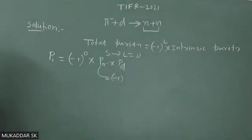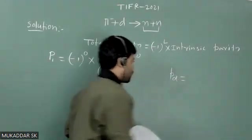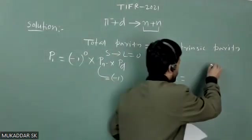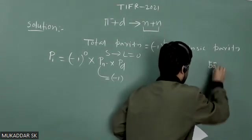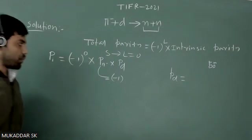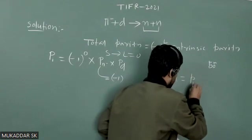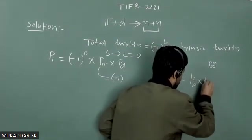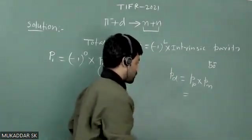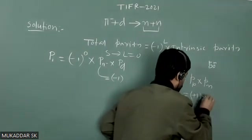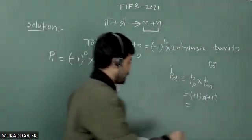Now we have to calculate the intrinsic parity of the deuteron. The deuteron is basically made up of a proton and a neutron. It has one proton and one neutron. So the total intrinsic parity of the deuteron will be the multiplication of the intrinsic parity of the proton and the intrinsic parity of the neutron. Since both are fermions, their intrinsic parity is plus one times plus one, so the intrinsic parity of the deuteron is simply plus one.